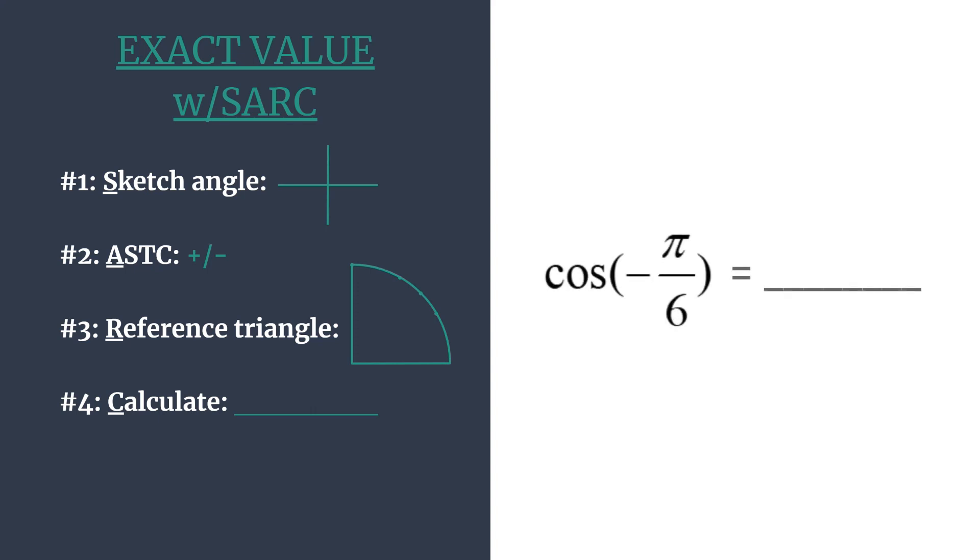So we'll use this method to find the exact value of cosine of negative pi over 6. First, let's sketch our angle's terminal side. Remember, a negative in front of an angle simply indicates that it rotates clockwise. So from standard position, we rotate pi over 6 radians. That's going to put our terminal side looking about like this.